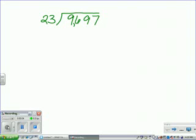Let's solve another problem using the partial quotients method, and our dividend is just going to be a little bit larger than in the last problem. So our problem is 9,697 divided by 23.